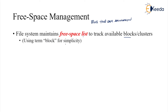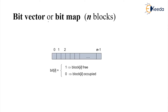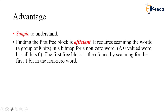One of the easiest methods is the bit vector method. If there are n blocks, then the total bit vector size will be n, so indices 0 to n minus 1. The simplest way: if bit i is equal to 1, that means the block is free; and if bit i is equal to 0, that means block i is occupied. The advantage here is it's simple to understand.